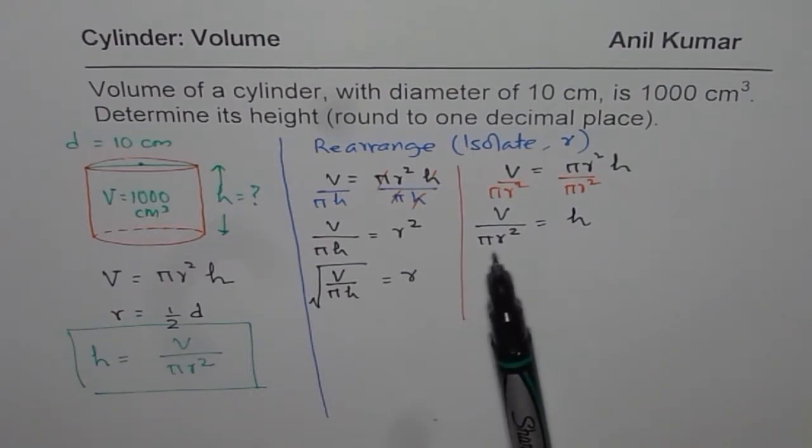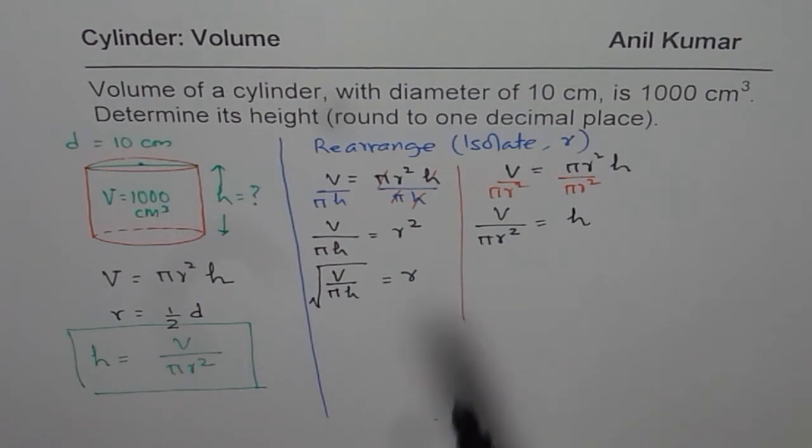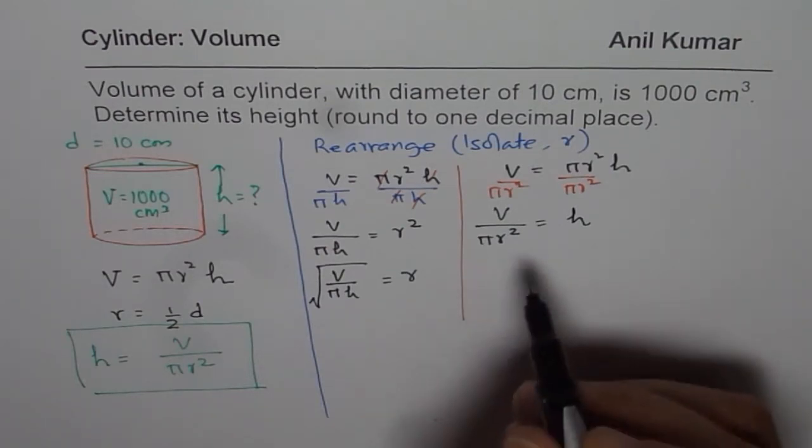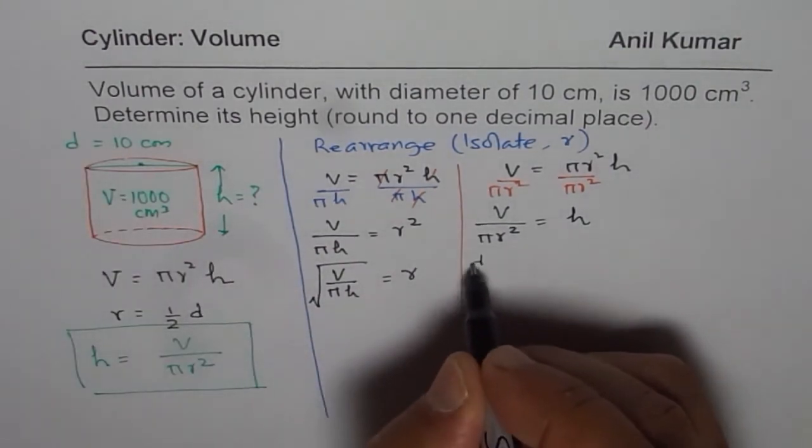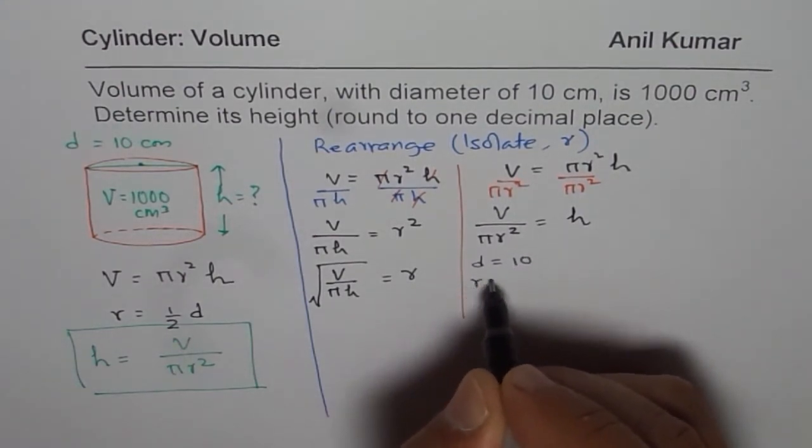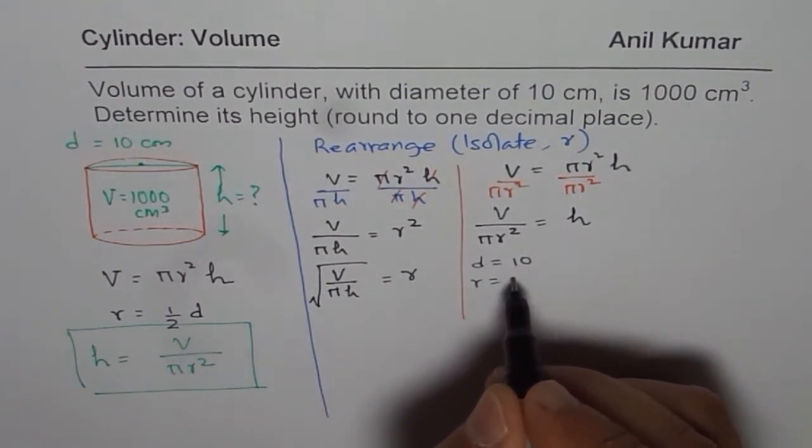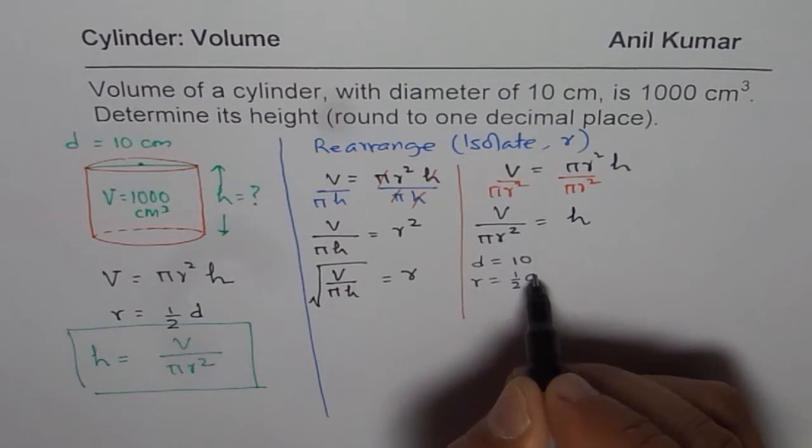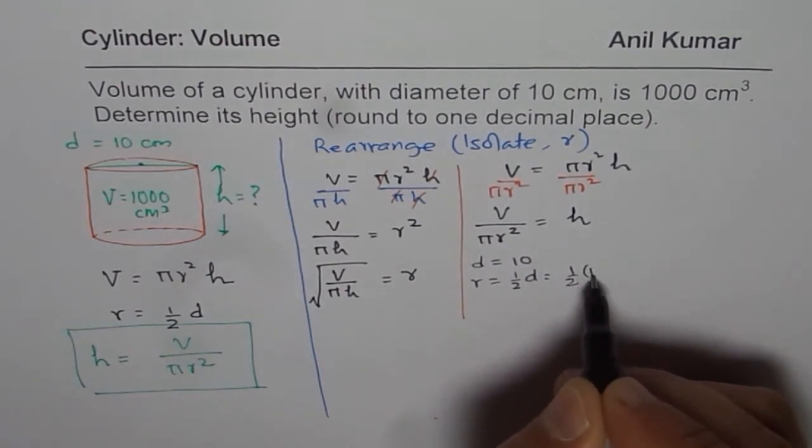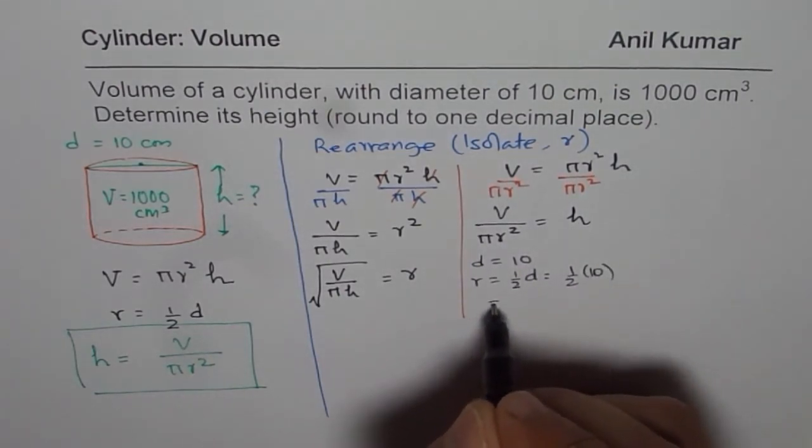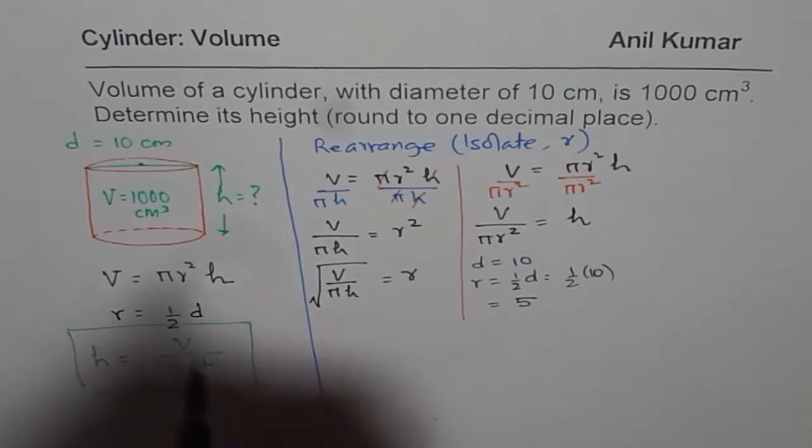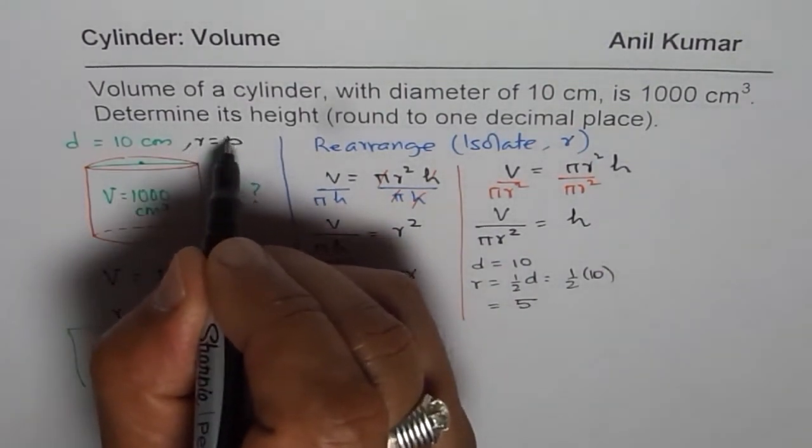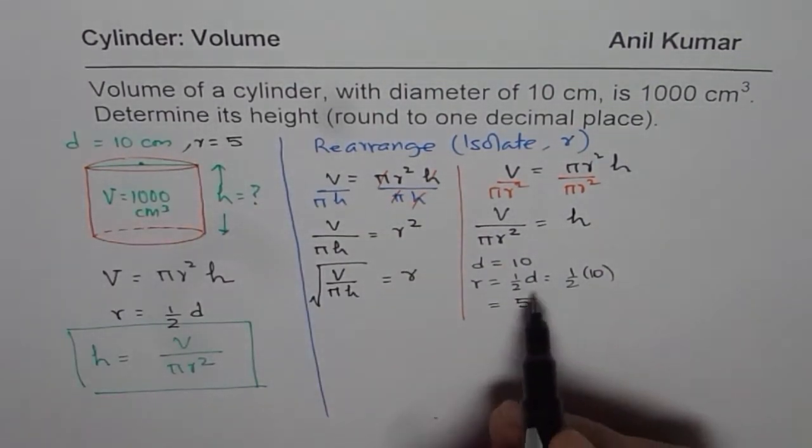Before that, we need to find radius. We are given diameter as 10. So diameter is 10. Radius is half of diameter, so it is half of 10.